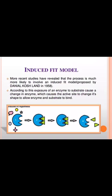The next theory is the induced fit model. More recent studies have revealed that the process is much more dynamic. The induced fit model was proposed by Daniel Koshland in 1958. According to this theory, the exposure of an enzyme to a substrate causes a change in the enzyme, which causes the active site to change its shape to allow the enzyme and substrate to bind. The enzyme changes its shape according to the substrate molecule. When the substrate comes closer to the enzyme, the active site of the enzyme changes its structure according to the substrate molecule. The substrate then fits with the enzyme binding site and forms the enzyme-substrate complex, which further catalyzes the substrate molecule to form the product.